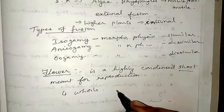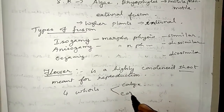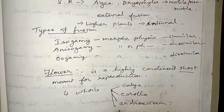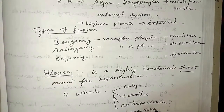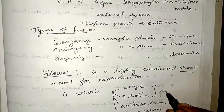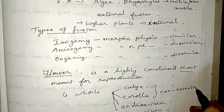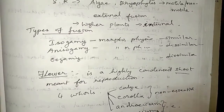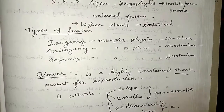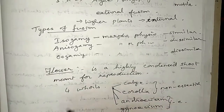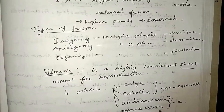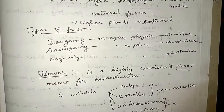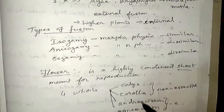The four whorls of the flower are calyx, corolla, androecium, and gynoecium. Calyx and corolla are the non-essential whorls of the flower, whereas androecium and gynoecium are the essential whorls. Androecium produces the male gametes and gynoecium produces the female gametes. Androecium consists of stamens whereas gynoecium consists of carpels. In this lesson we shall discuss pre-fertilization, fertilization, and post-fertilization of these gametes.